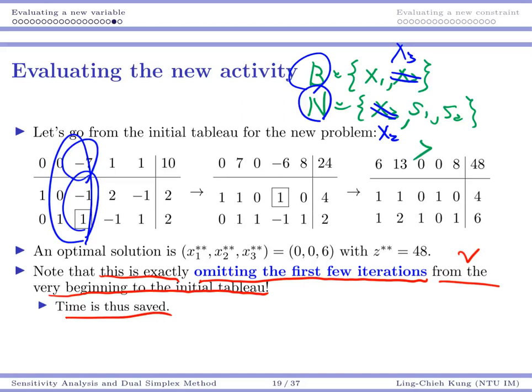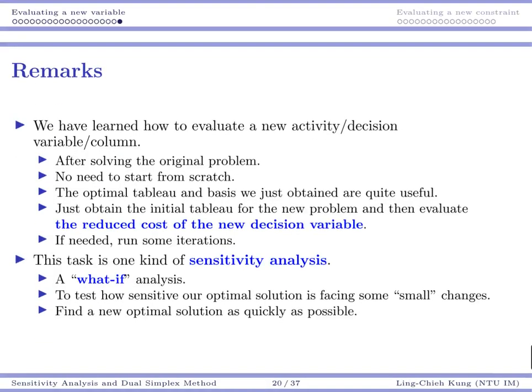So to give you a quick summary, we have learned how to evaluate a new activity or a new decision variable or a new column. As long as you have that, you first solve your initial original problem, and you don't need to do it from the beginning. Your optimal tableau for your original problem and optimal basis for your original problem are quite useful.